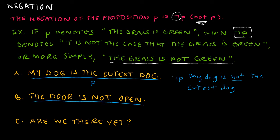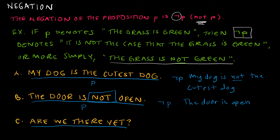If 'the door is not open' is P, and I'm negating something that already seems negated, remember that in mathematics two wrongs do make a right. So 'the door is not not open' means 'the door is open.' We could say 'it is not the case that the door is not open,' but in real life we'd just say 'the door is open.' Last one: 'Are we there yet?' Be careful — this is not a proposition. It's not a declarative statement that is either true or false, so I can't negate it.